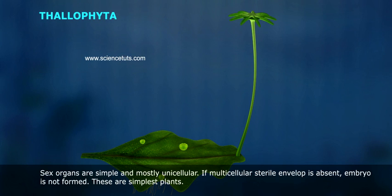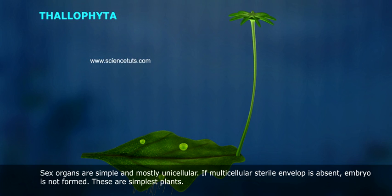Sex organs are simple and mostly unicellular. If a multicellular sterile envelope is absent, embryo is not formed. These are the simplest plants.